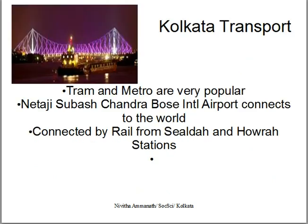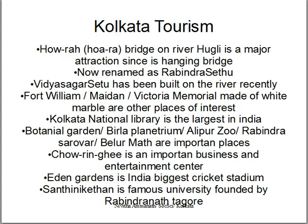The Howrah Bridge is a steel hanging bridge built very long back in India; it was later renamed. Kolkata is connected by tram as well as metro — the first metro of India was in Kolkata, going both underground and overground. Netaji Subhash Chandra Bose International Airport connects Kolkata to the world. It is also connected by rail from Sealdah and Howrah stations.